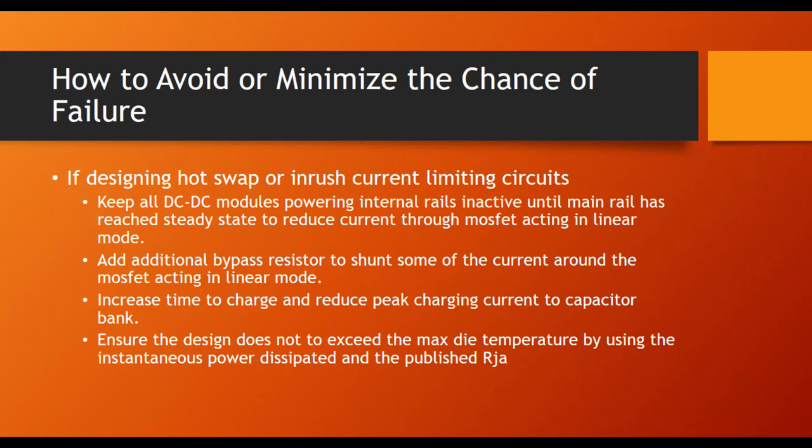Adding additional bypass resistors to shunt some of the current around the MOSFET that's acting in linear mode is also another way to again reduce the amount of power being dissipated in the device. Reduce the charge current for cap banks so that you don't have such a high peak charging current, and you can do this by increasing the time to charge.